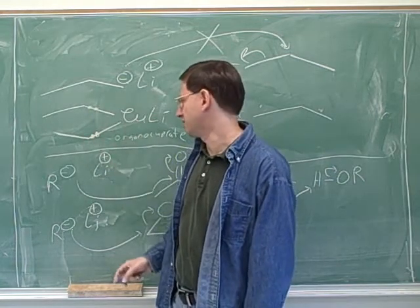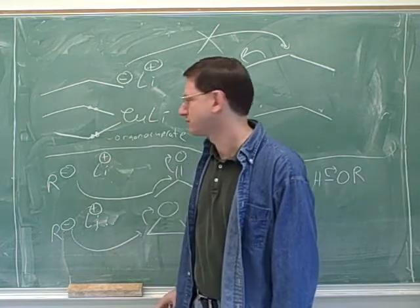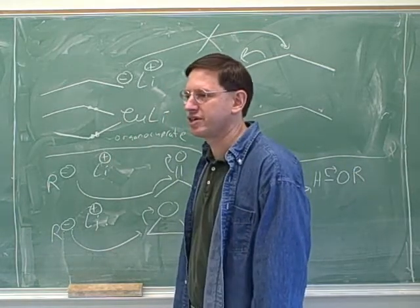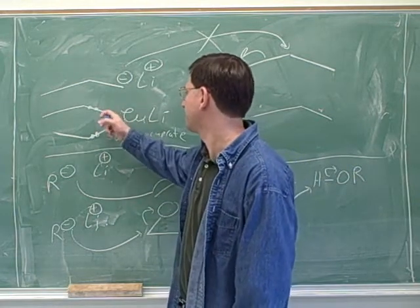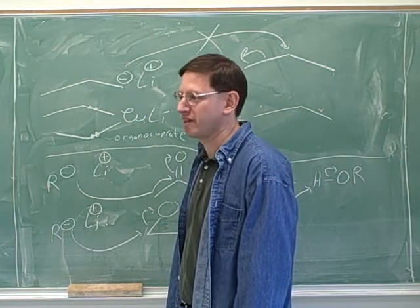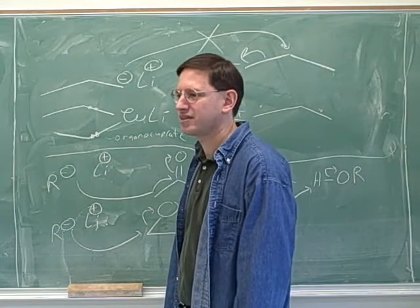Notice that organocuprates are a little complicated because there's always two carbon chains on the copper. Why is that? Just a matter of valences and balancing the charges somewhat. So it just turns out that copper is not going to be neutral unless it's bonded to two separate things. We don't need to worry about that too much. We should just have that memorized.